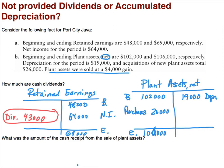We have $102,000 beginning plus purchases of $26,000 minus depreciation of $19,000, which does not equal $106,000 ending. So we need to figure out what we sold. Since this is a plant asset net account, it gives us the book value of the asset sold. Doing the math, we find that the book value of the asset sold is $3,000. The last part of the question is: what was the amount of the cash receipt from the sale of the plant assets?